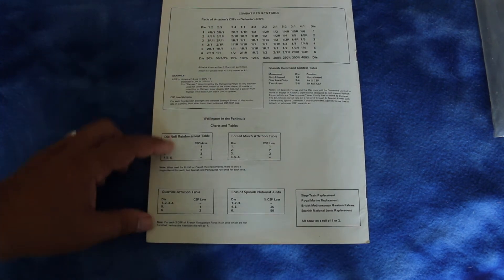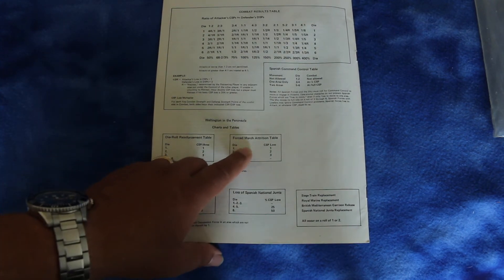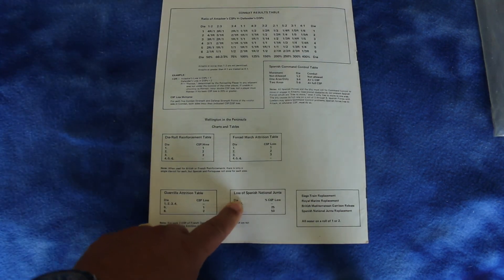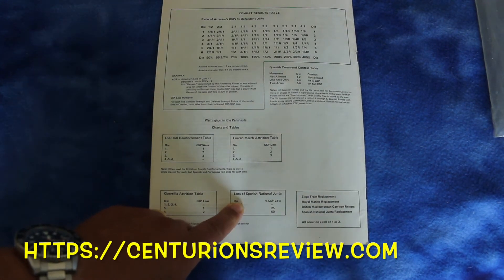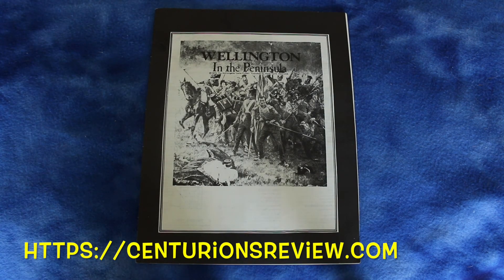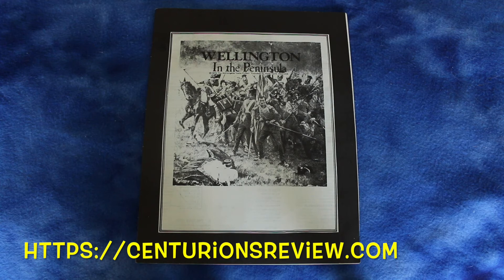Combat results table. Here's your reinforcement force march attrition table and guerrilla attrition table and loss of Spanish national junta table. Thanks for watching. I have to tell Len to run this game sometime so we can try it out. Have a good evening.